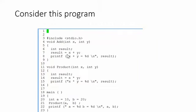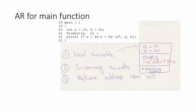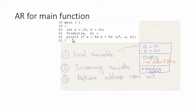In this example, we have add, product, and a main function — three functions, each independent of each other. For the main function, the activation record has three pieces of information: local variables (a = 10, b = 20), incoming variables (empty — we didn't pass anything to main), and the return address upon exit. When the main function is done, we go to the operating system — the OS takes control.